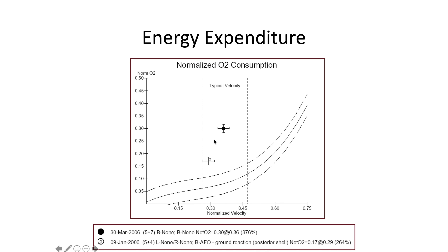We also measure energy expenditure. A child walks around the periphery of the gait lab with a mask connected to an oximeter and oxygen supply so we can measure gait efficiency. Many patients with abnormal gait patterns or spasticity show very high energy consumption. If a patient initially has very high energy expenditure at a given walking speed and then improves with an intervention, their oxygen consumption can decrease toward the normative range.